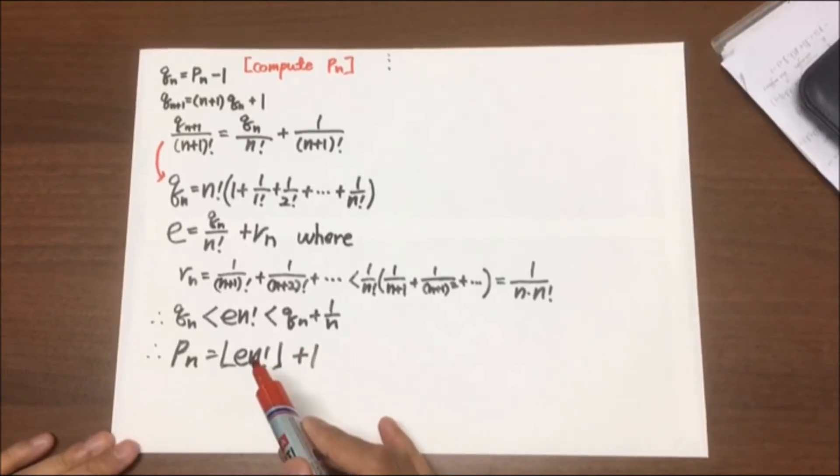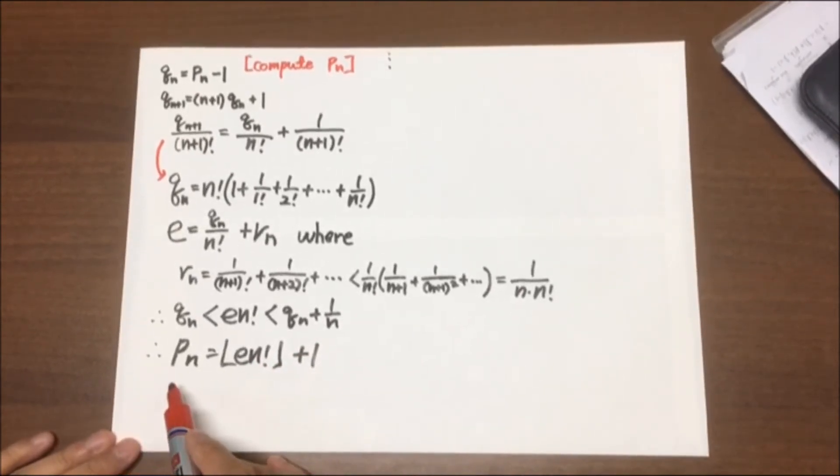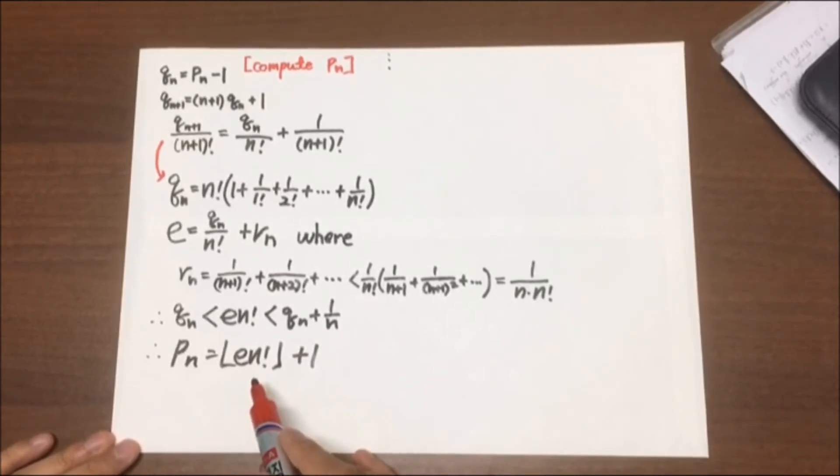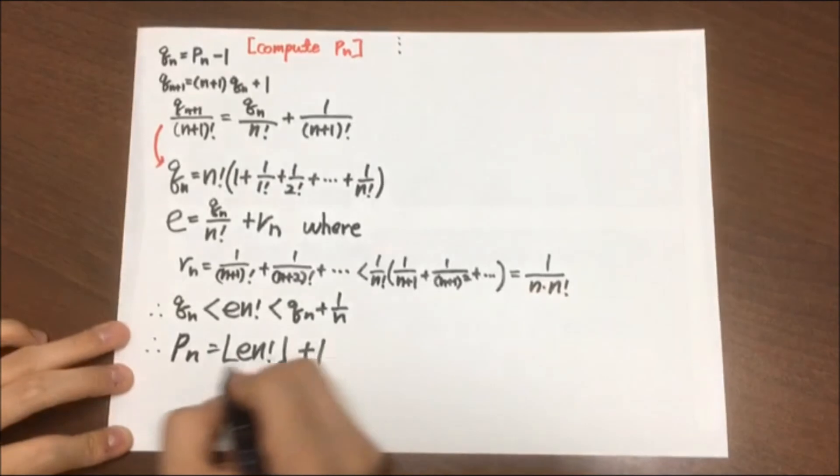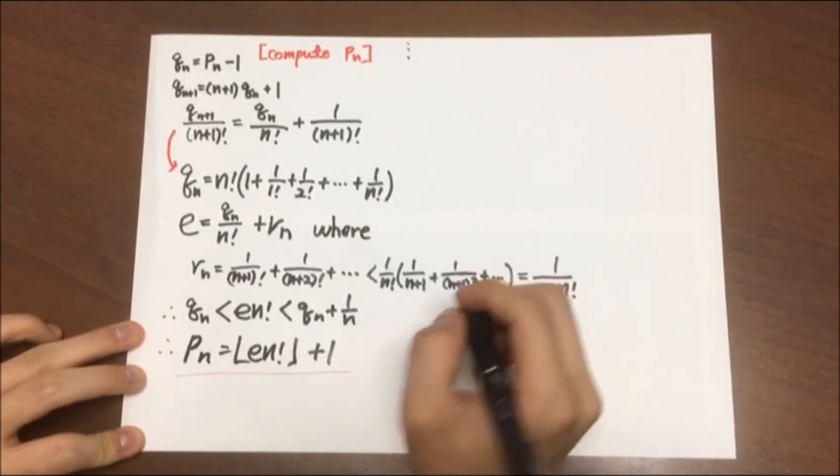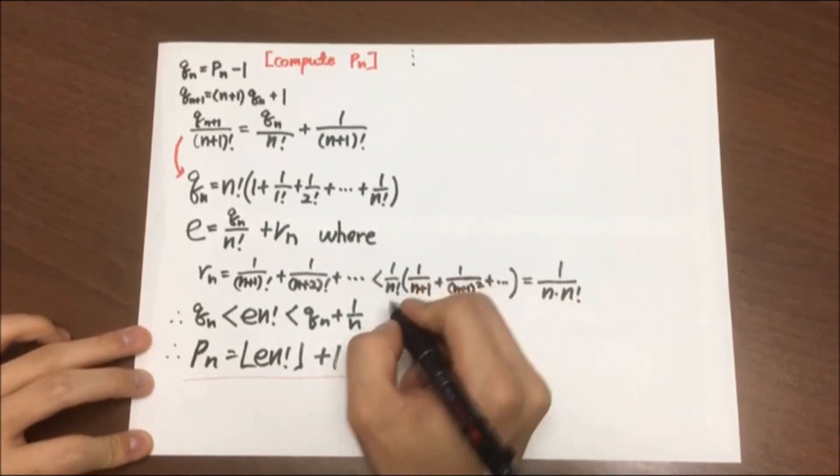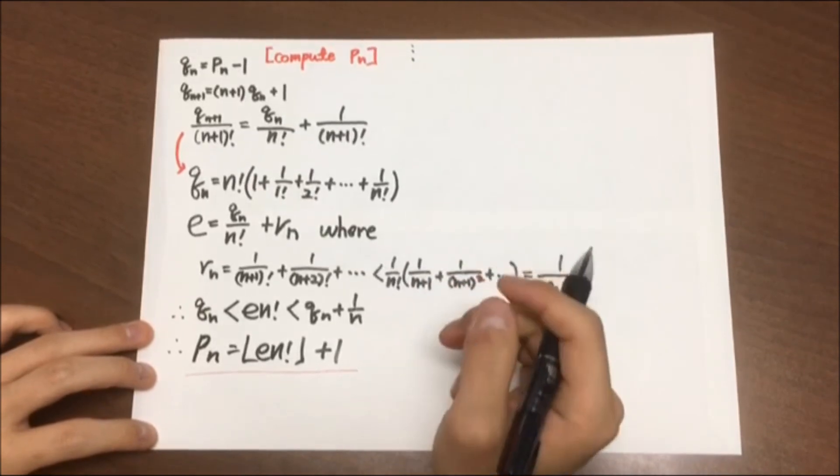Since P_N is Q_N plus 1, therefore P_N is equal to e times N factorial plus 1. So that's it for the theorem we prepared. And now let me give you some features of Ramsey's number.